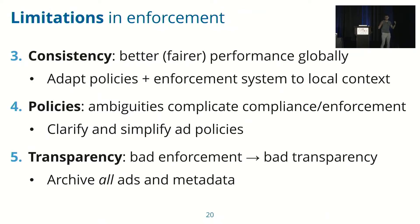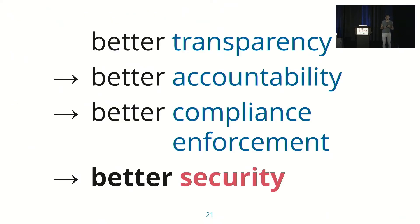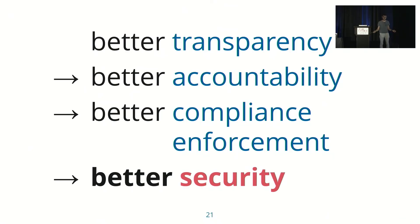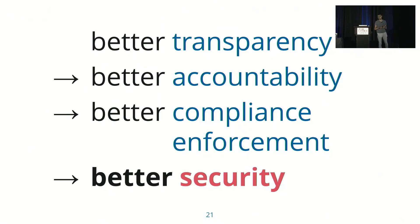We advocate archiving all ads and making all metadata available to enable external oversight. With better transparency into the ecosystem, we can achieve better accountability. And when there's accountability, there's an incentive for advertisers to start complying and an incentive for Facebook to improve their enforcement. Once we have better compliance and better enforcement, we achieve our goal of better security for the online political advertising ecosystem — ensuring that the benefits of online political advertising outweigh the risks and vulnerabilities, and helping maintain the security of online political speech.